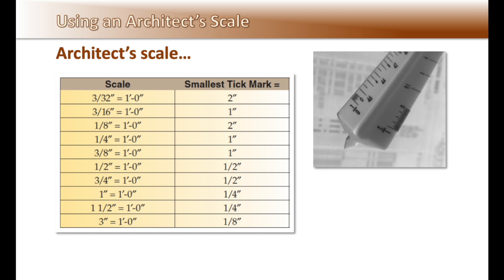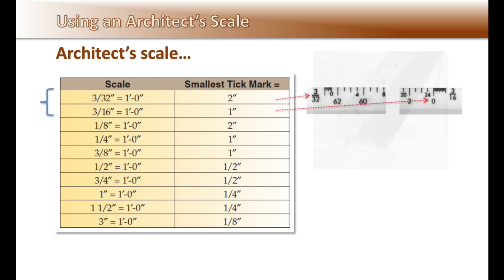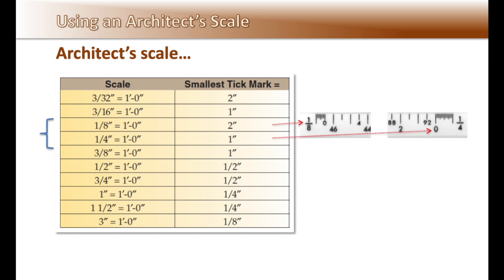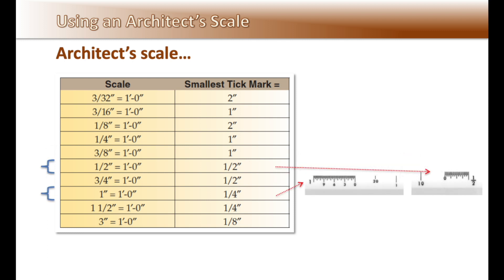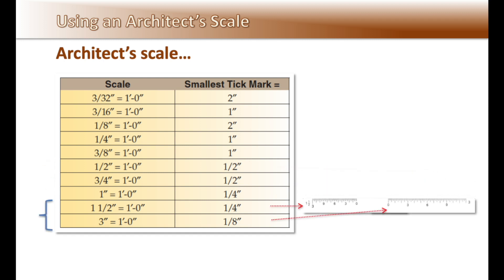There are two scales on each edge of the scale, one either equal to one-half or double the other side — for example, three thirty-seconds and three sixteenths; one-eighth and one-quarter scale; three-eighths and three-quarter inch scale; one-half and one-inch scale; and one-and-a-half and three-inch scale. Remember, each scale represents a full foot. The smaller the scale, the less information that can be shown in the one-foot increment.